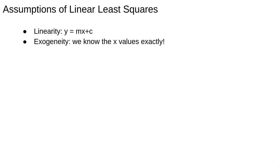The next assumption is exogeneity. This just means that the x variables don't have any errors, that is, we know them exactly. This is often violated, but if the x values are known much more precisely than the y values, then this violation of assumptions doesn't cause too many issues.